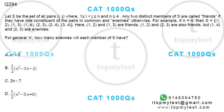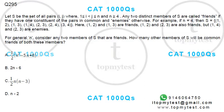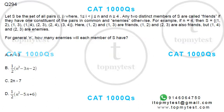This is a double question on permutations, combinations, and counting methods. It's a conceptual question — not difficult, but takes a little time getting used to. S is the set of all pairs (i, j) where i ≥ 1, i < j, and j ≤ n, with n ≥ 4. Any two distinct members of S are called friends if they have one constituent of the pairs in common, and enemies otherwise.